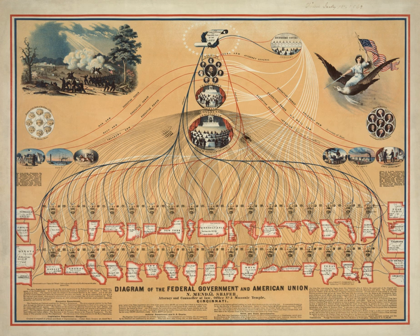The day-to-day enforcement and administration of federal laws is in the hands of the various federal executive departments, created by Congress to deal with specific areas of national and international affairs. The heads of the fifteen departments, chosen by the President and approved with the "advice and consent" of the U.S. Senate, form a Council of Advisors generally known as the President's cabinet. Once confirmed, these cabinet officers serve at the pleasure of the President.